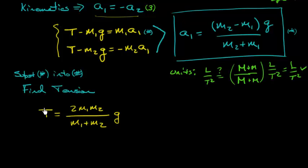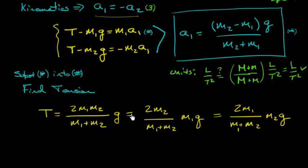But here's the interesting part. I'm going to write this tension in two different ways. So the first way, I pull out this 2m1 over the sum of the masses. And the second one, I pull out 2m1. The first one, I pull out 2m2. And what does this mean?